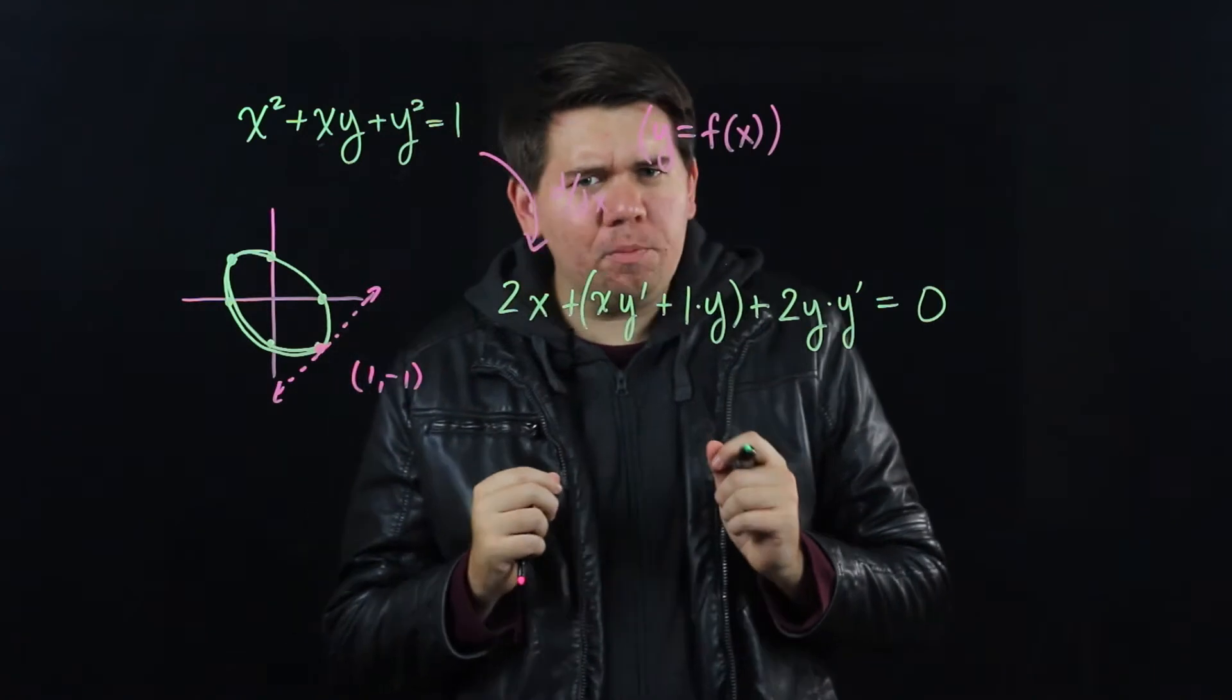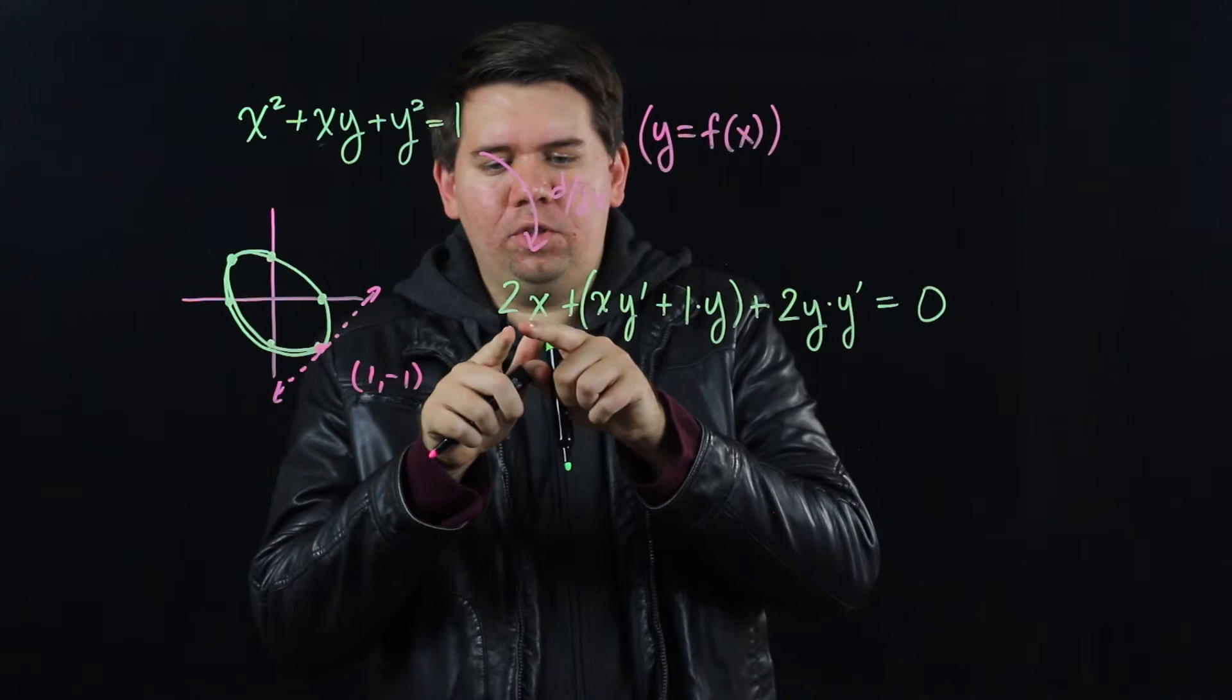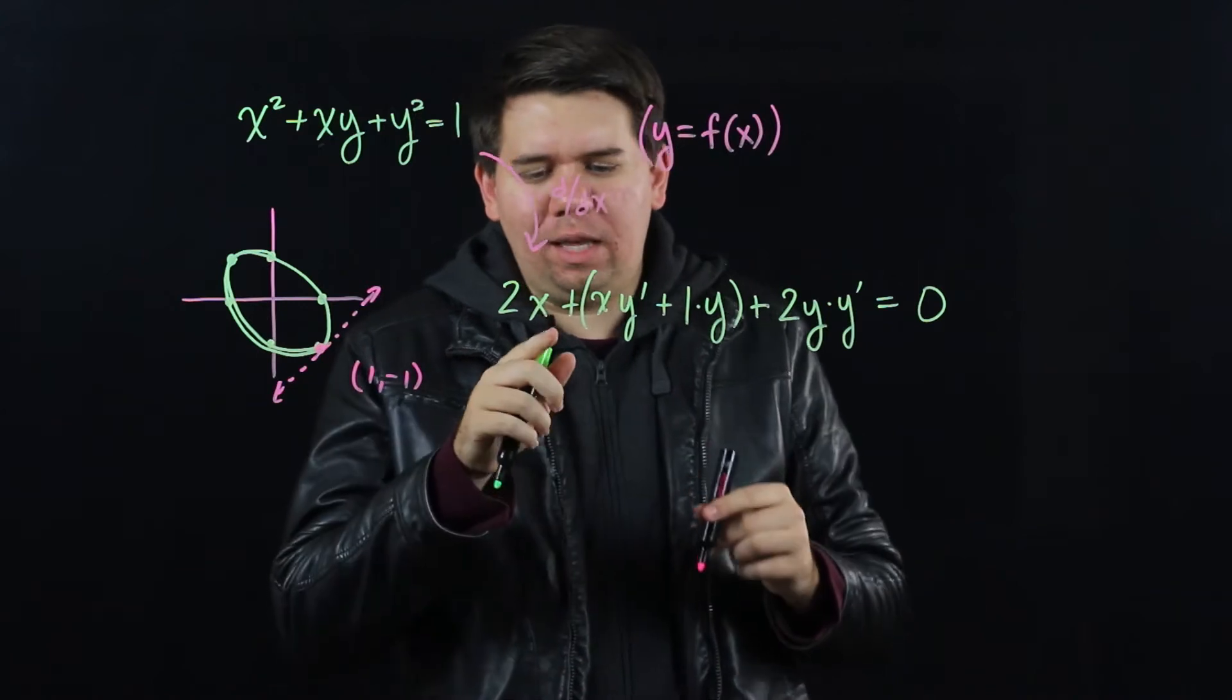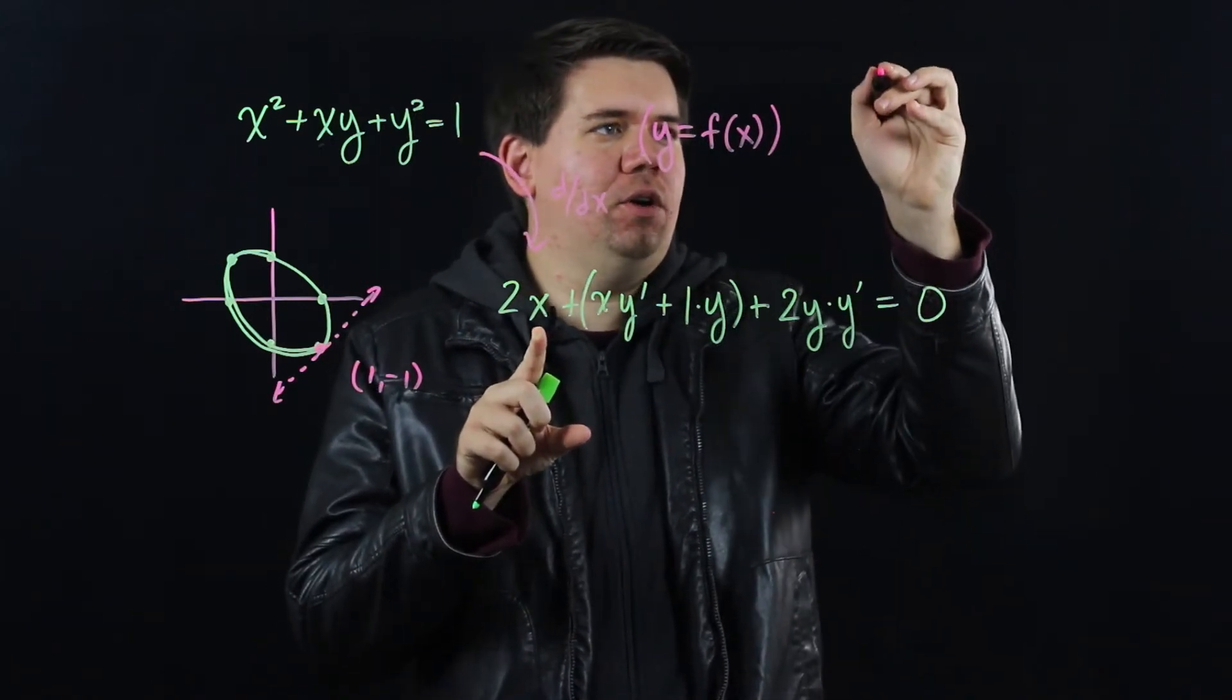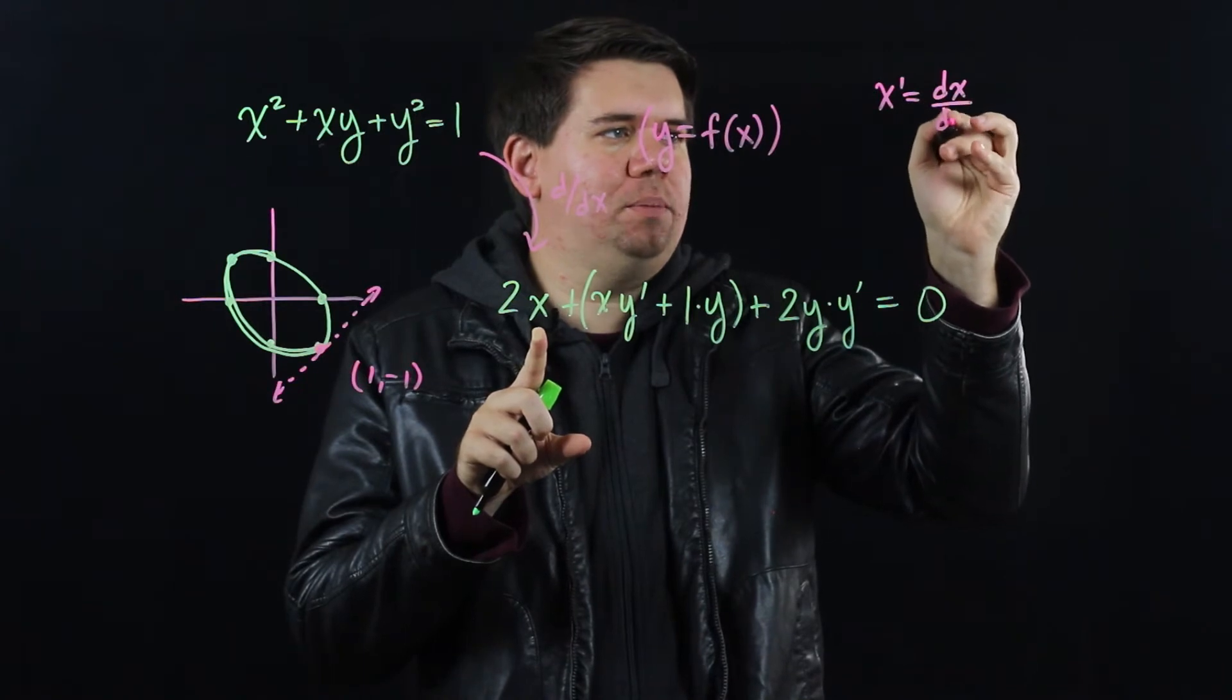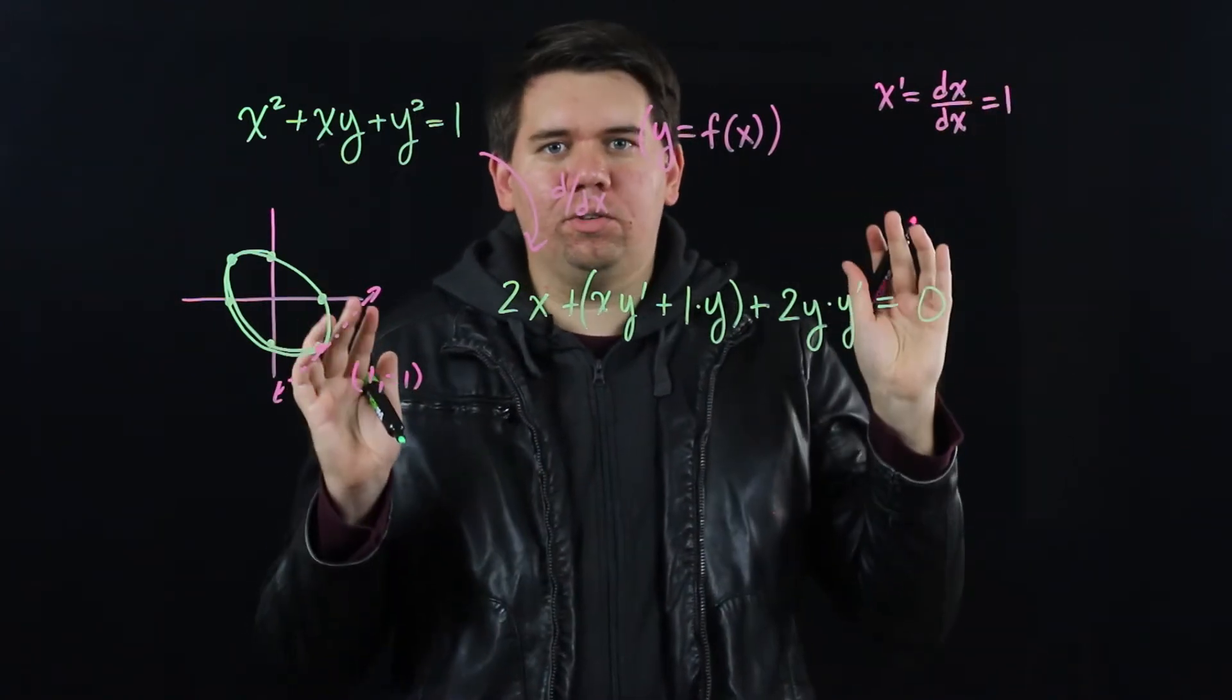Now, you might be a little bit concerned because here we had a 2y, y prime. But here there was no 2x, x prime. So you're like, that's a little bit weird. Why are we treating y different than x? And so just think for this, well, if you did try to write, you know, some x prime, what do you mean by that? You'd be saying take the derivative of x with respect to x. But that's just 1, so there's no need to write it.